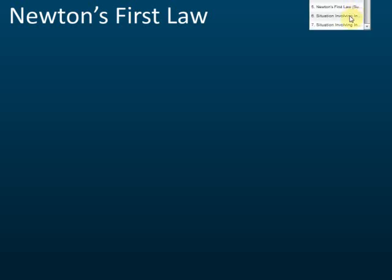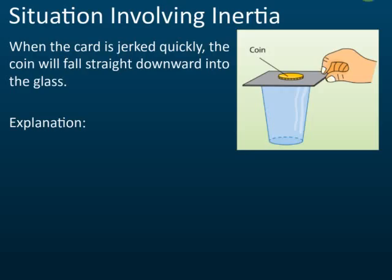Here is an example. We have a coin lying on a cardboard, and we have a glass next to it. Now, if the cardboard is jerked quickly — pulled very quickly — you will find that the coin does not move together with the cardboard. Instead, it drops into the glass.